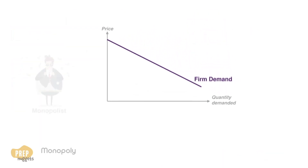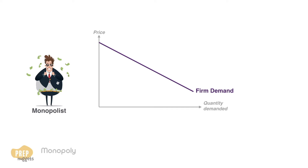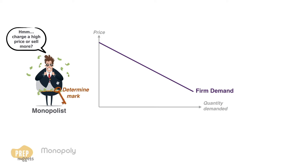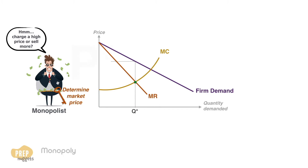Since a monopoly faces a downward sloping demand curve for its product, profit maximization involves a trade-off between price and quantity sold. As the only seller in the market, the monopolist can determine the market price to charge, hoping to find the price and output combination that'll bring the maximum profit to the firm. To maximize profit, firms will expand output until marginal revenue is equal to marginal cost. So likewise for the monopolist, the profit-maximizing output is Q* with a price of P*. At this price and output level, economic profit for the firm is maximized.